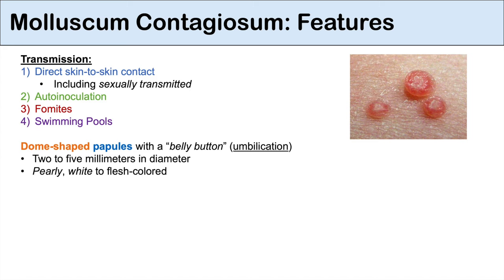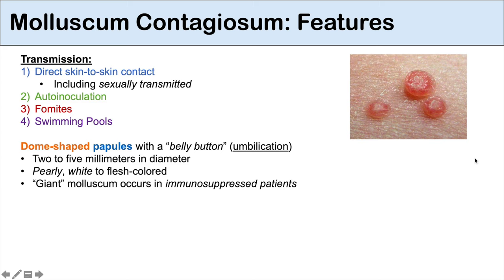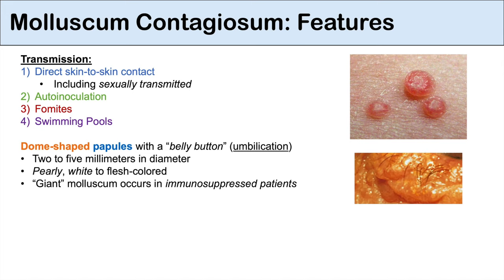The papules are pearly white — you can see that here — and they can also be flesh colored, with that central belly button or umbilication. In individuals who are immunosuppressed, they can get what we call giant molluscum, where the papules are larger in size and can coalesce into larger plaques.